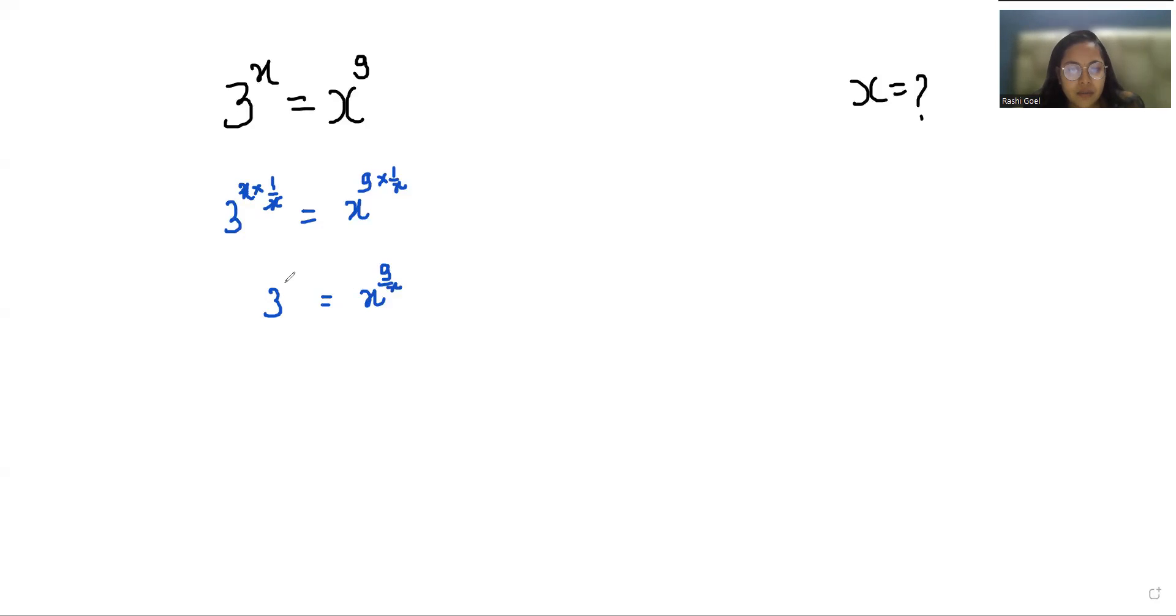You can cancel out, so 3 power 1 by 9 equals x power 1 by x. Now I'm going to multiply with power in power 3 by 3 both sides.